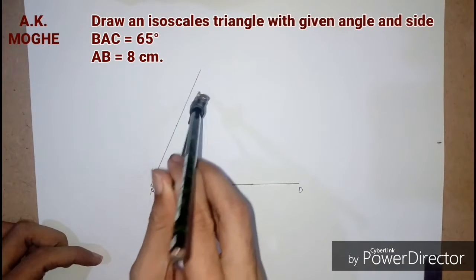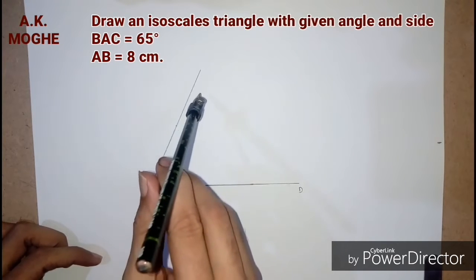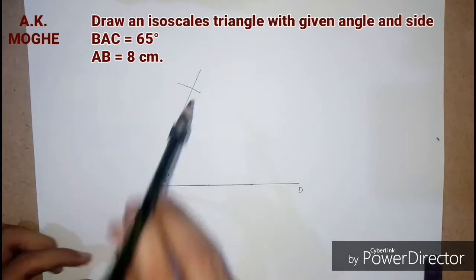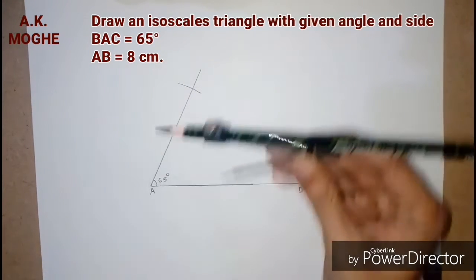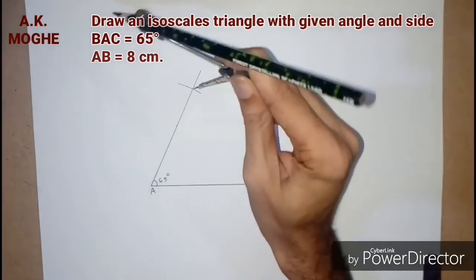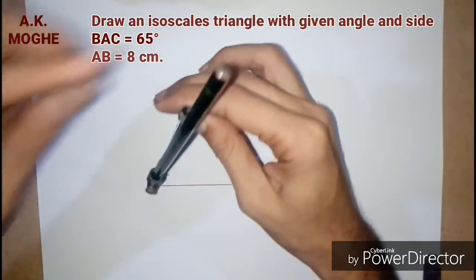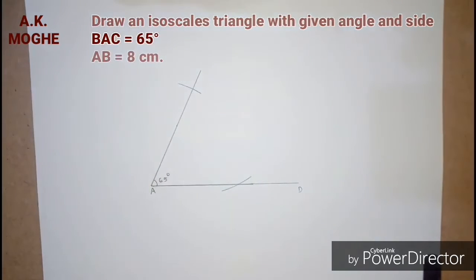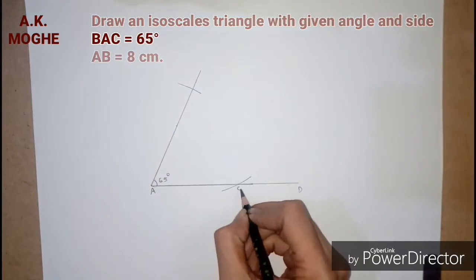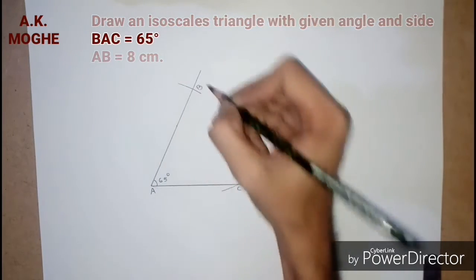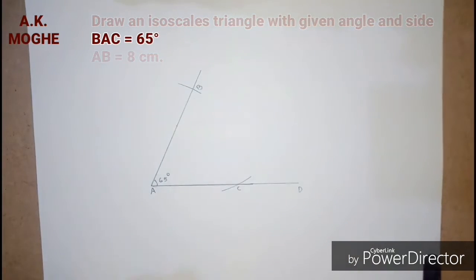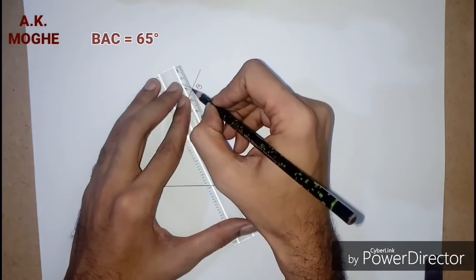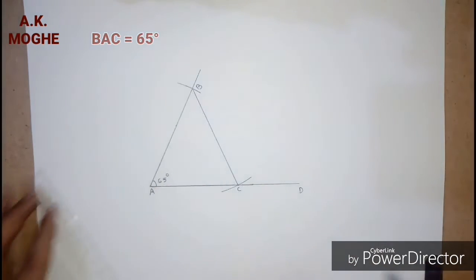Here I am taking 9 centimeter as the measurement in compass for the two sides of the isosceles triangle. Here is an isosceles triangle ready with a 65 degree angle.